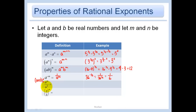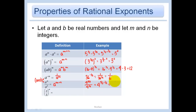When I divide with the same bases, subtract the exponents: a to the m over a to the n is a to the m minus n. So if I have 4 to the 5 halves over 4 to the 1 half, same bases — subtract the exponents. 5 halves minus 1 half is 4 halves, which is 2. And 4 squared — you could write 16, or leave it like that.